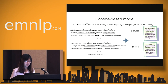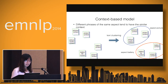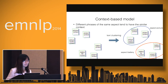The context-based model goes through all the reviews, collects all the context words, and generates a context document for each aspect phrase. The basic assumption here is that different phrases of the same aspect tend to have similar context. For example, picture, photo, and picture quality in the camera domain all refer to the photo aspect and should share similar context. After we have all the context documents, all we have to do is text clustering, with one cluster corresponding to one aspect.